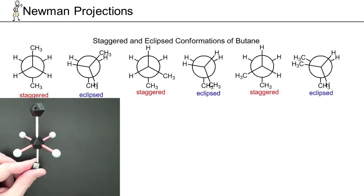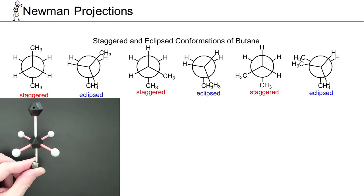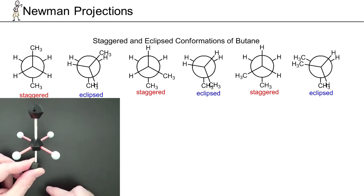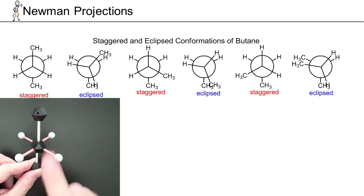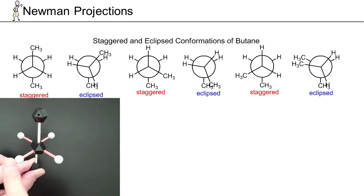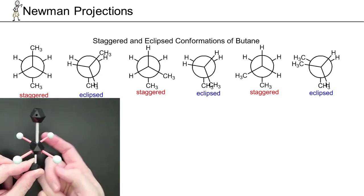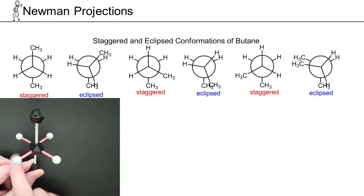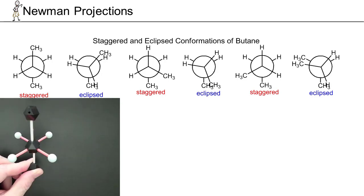This corresponds to what's called the anti-conformation. It's a special type of staggered conformation. You can see why it's called staggered — the three bonds coming off the front carbon are exactly in between the three bonds coming off the back carbon.